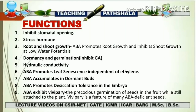Now let's talk about the different functions of abscisic acid. The first function is inhibition of stomatal opening whenever there is a stress condition — we will see the signaling pathway for this in the upcoming slide. The second function is that it is regarded as the stress hormone. The role of ABA in freezing, salt, and water stress leads to characterization of abscisic acid as a stress hormone.